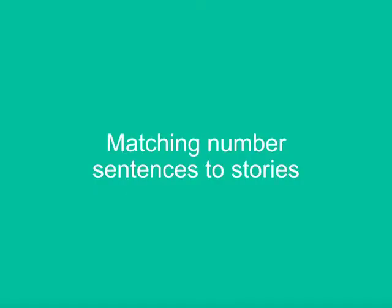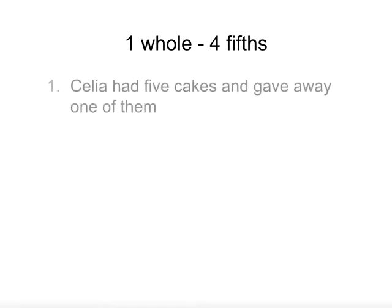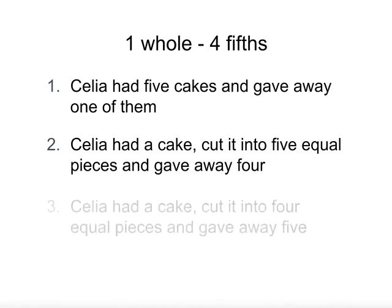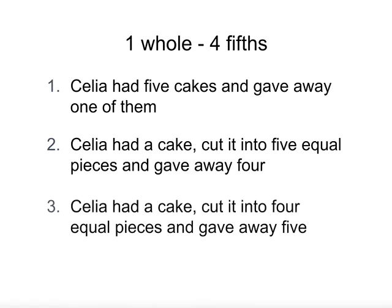Now let's look at matching sentences to stories. Here we have one whole minus four fifths. We have to find the correct story. Is it Celia had five cakes and gave away one of them? Celia had a cake, cut it into five equal pieces and gave away four? Or Celia had a cake, cut it into four equal pieces and gave away five? The first story says five whole cakes, give away one — this would be five take away one, which doesn't match our number sentence.